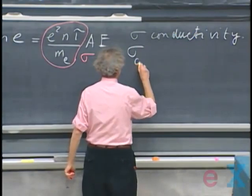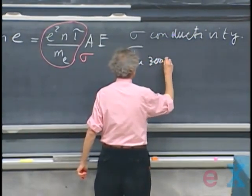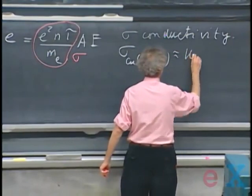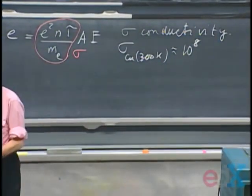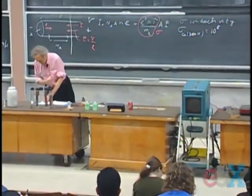So for copper, at room temperature, you'll find about ten to the eighth. You'll see more values for sigma later on during this course. This is in SI units.